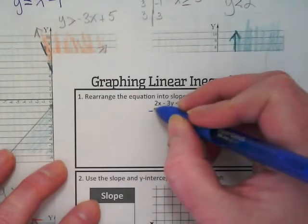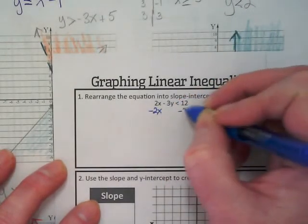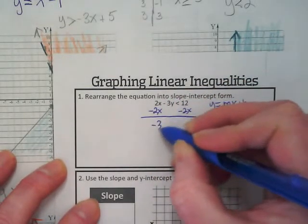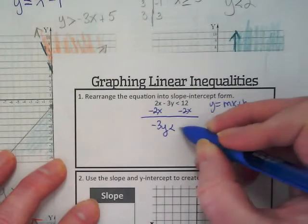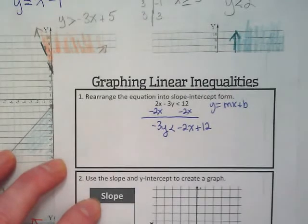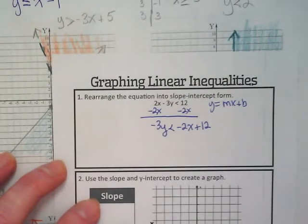So the first thing we're going to do is move that 2x. And I get negative 3y is less than negative 2x plus 12. What's our next step?